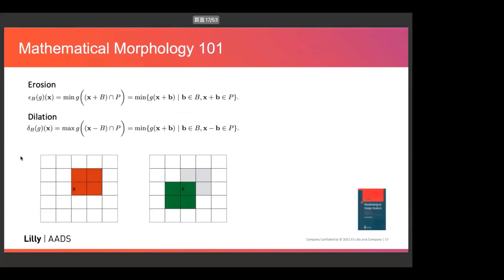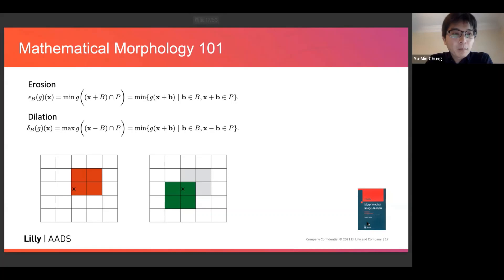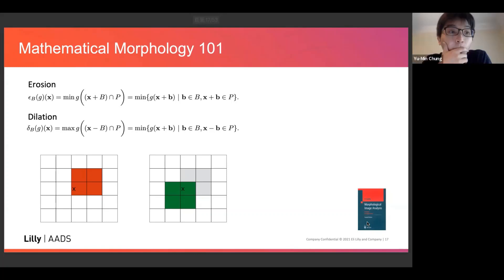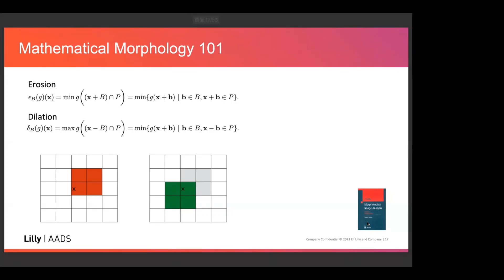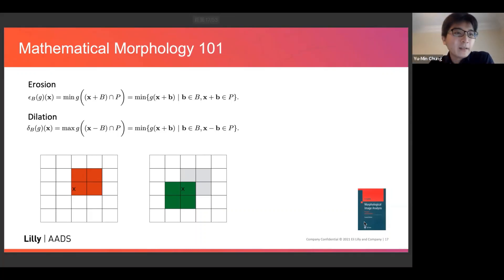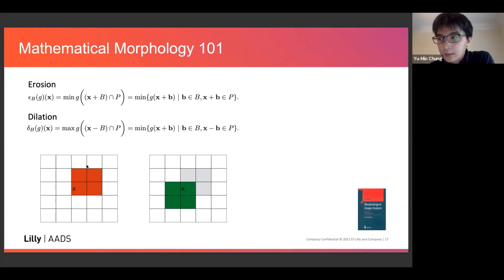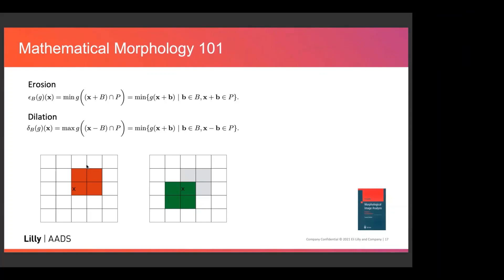Second question: have you considered randomizing the erosion and dilation, maybe with different parameters in a random sequence? That should be interesting to consider. You're thinking like randomly making the window, a random sequence of dilation and erosion? Yes, that's a really interesting idea.